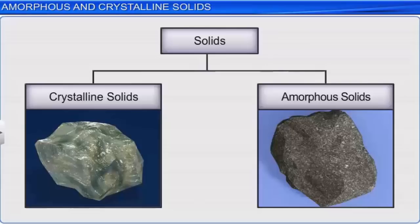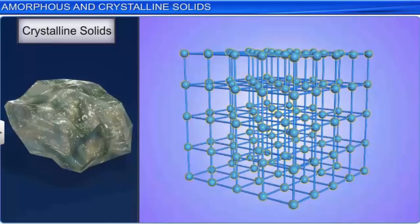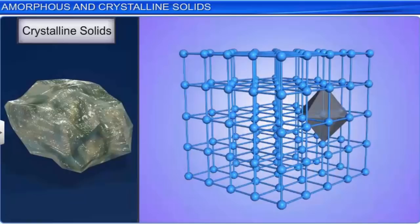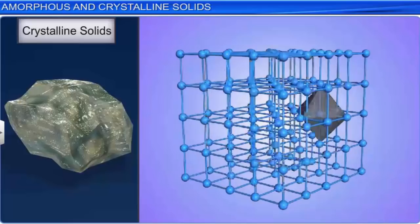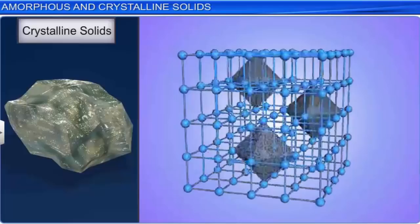Based on the arrangement of its constituents, solids are broadly classified into two categories: crystalline solids and amorphous solids. Crystalline solids have an orderly arrangement of their constituent particles such as atoms, ions, or molecules in three dimensions. They are arranged in an orderly manner to give a definite geometry to the crystals. Thus, a crystal is defined as a solid figure that has a definite geometrical shape with flat faces and sharp edges.